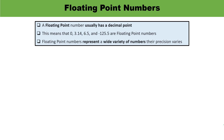A floating point number is a number which is usually represented in the form of a decimal point. For example, 3.14, 6.5, minus 125.5 — these are floating point numbers. Floating point numbers can be positive or negative and they represent a wide variety of numbers. When we talk about floating point, it refers to the fact that the number's radix point, which is the decimal point, can float. For example, you can write a number as 1.2345 or as 12.345 — here you can observe that the decimal point floats.